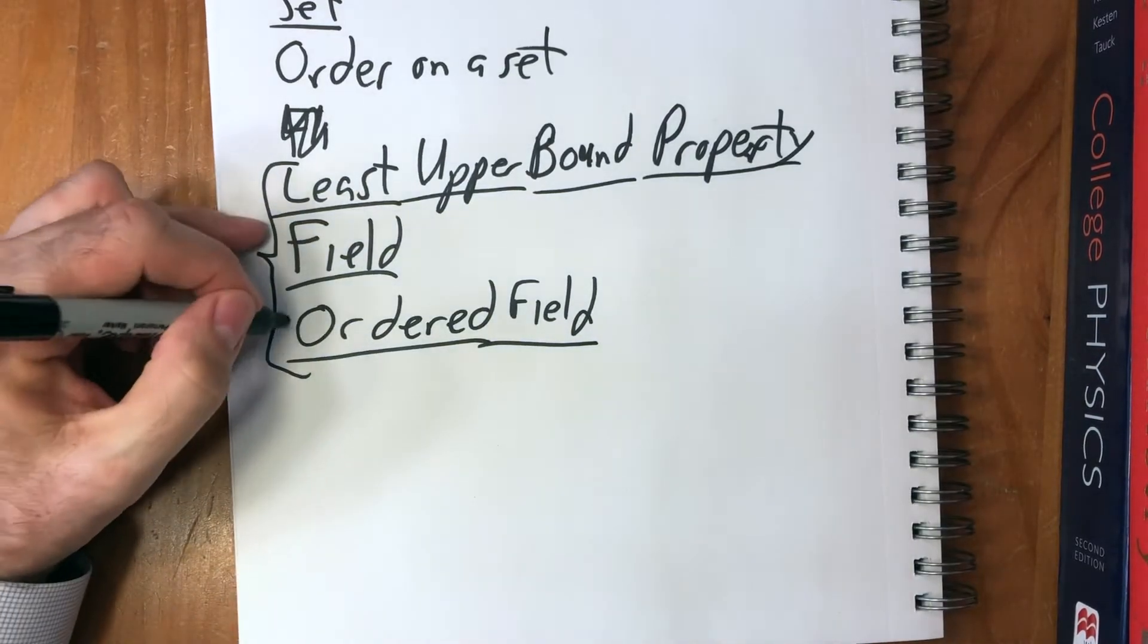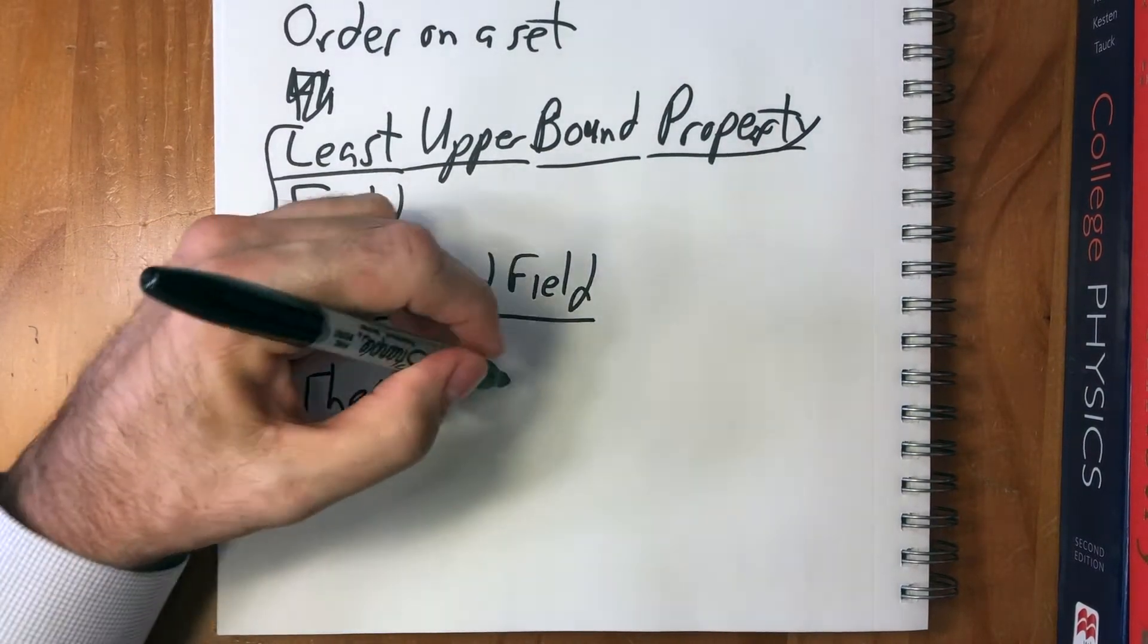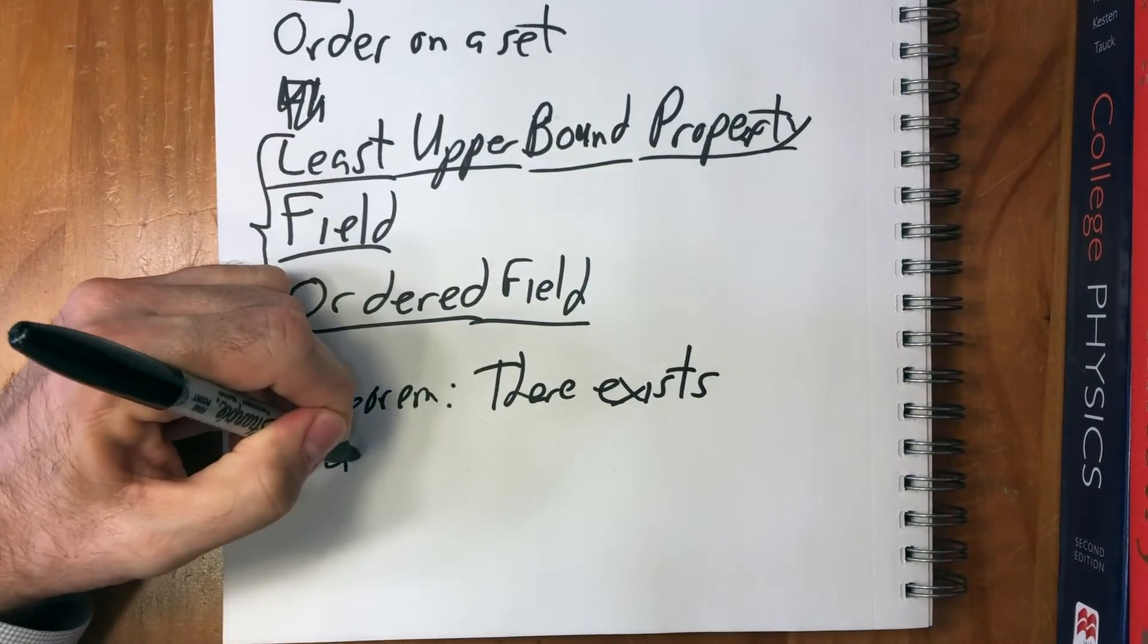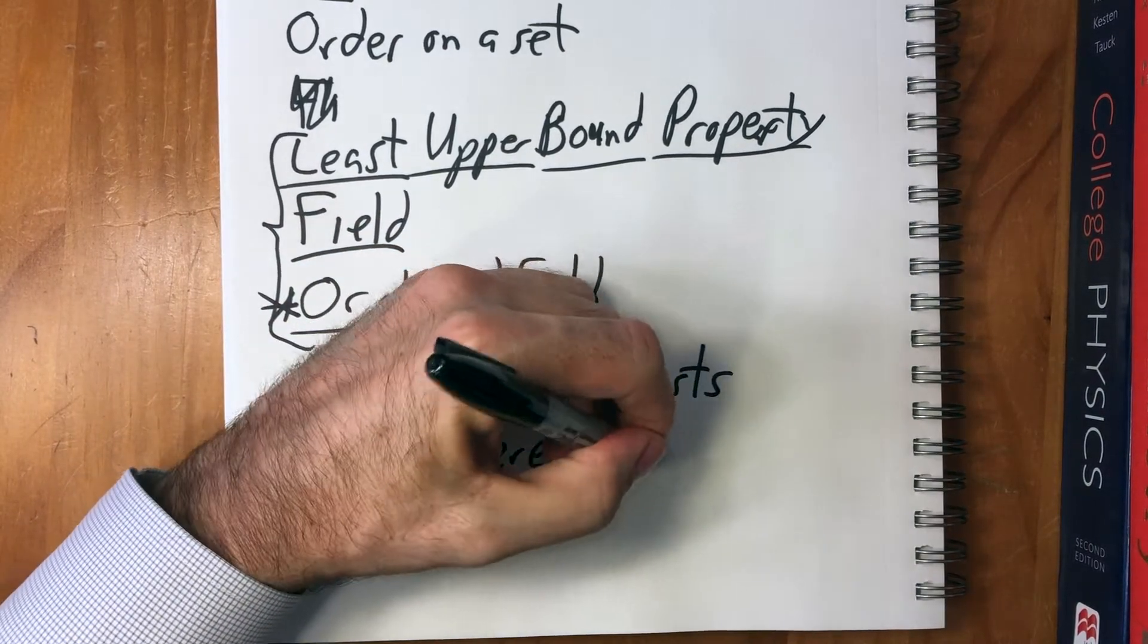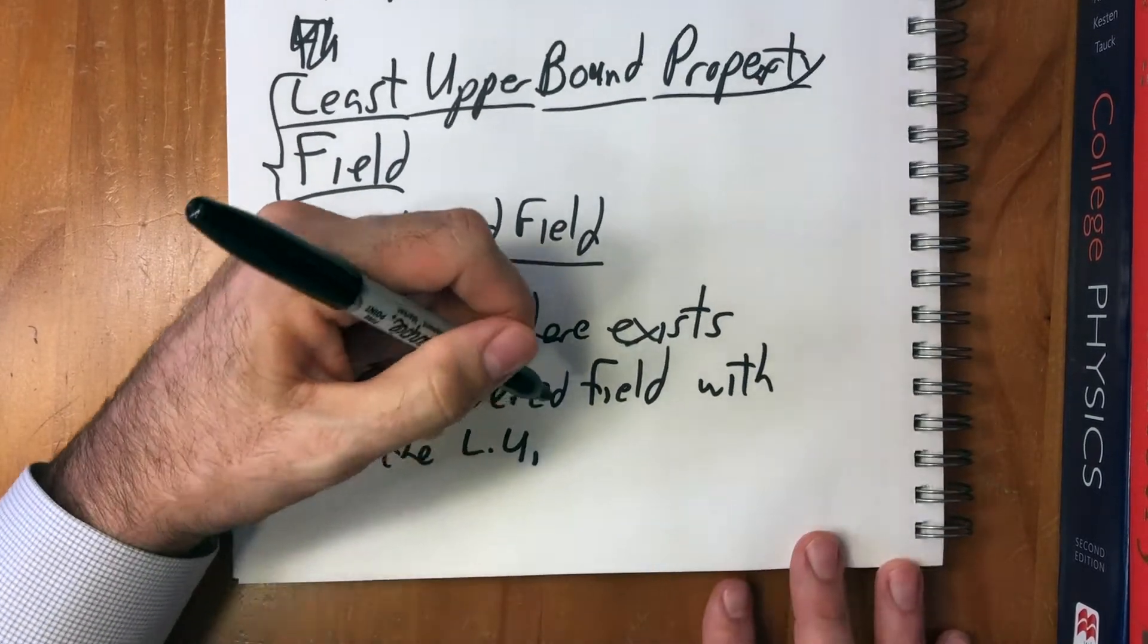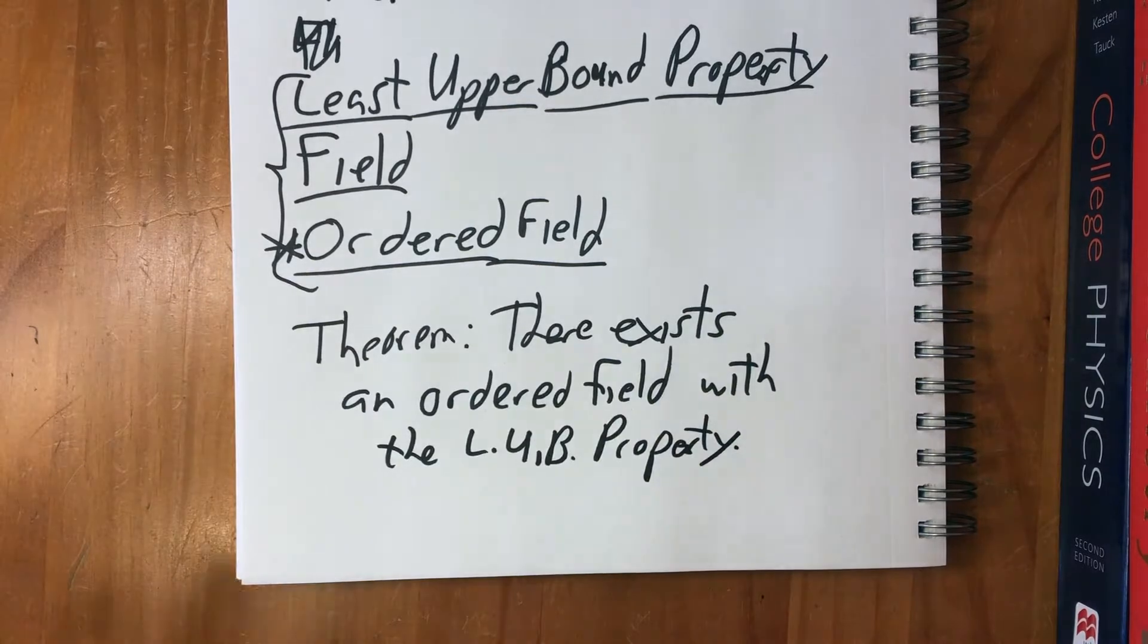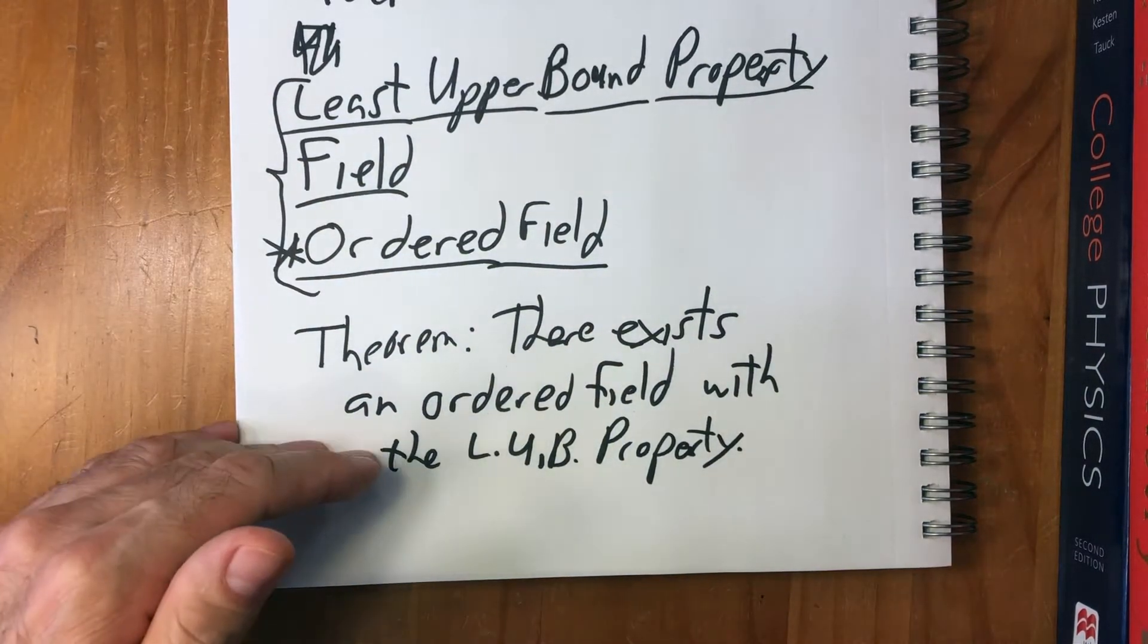So the last thing we have to look at is an ordered field. And then after that, the theorem that there exists an ordered field with the least upper bound property. So remember, the cool thing about doing this stuff abstractly is that we've talked about the axioms, we've even concluded things from those rules, but we don't actually know if such a set even exists. That's what we're going to have to prove here.